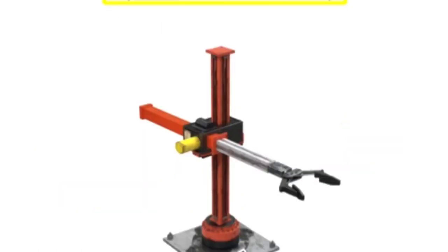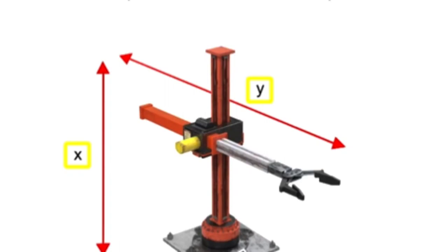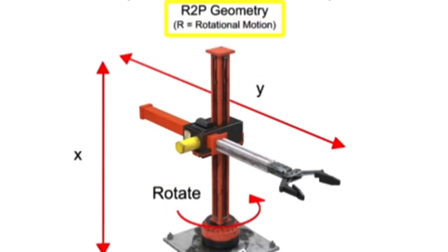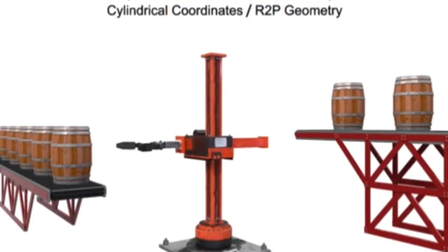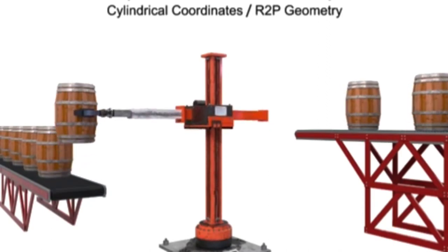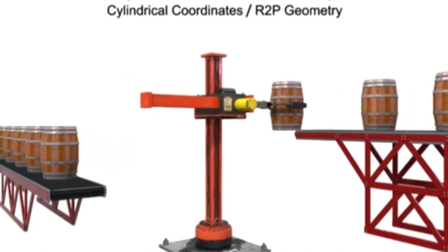Cylindrical arm geometry robots move linearly in two directions and rotate in one other. Since this type of robotic arm moves in two separate prismatic or linear directions and rotates in one direction, it's given the designation of R2P, where the R stands for rotational. This type of robotic arm is most often used in machine-tending, assembly, material handling, and palletizing operations.